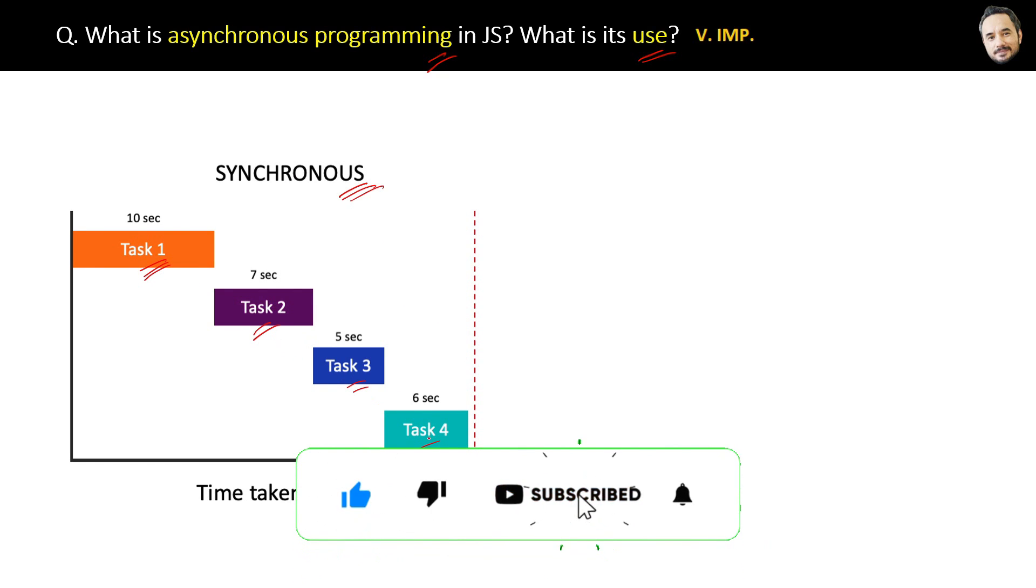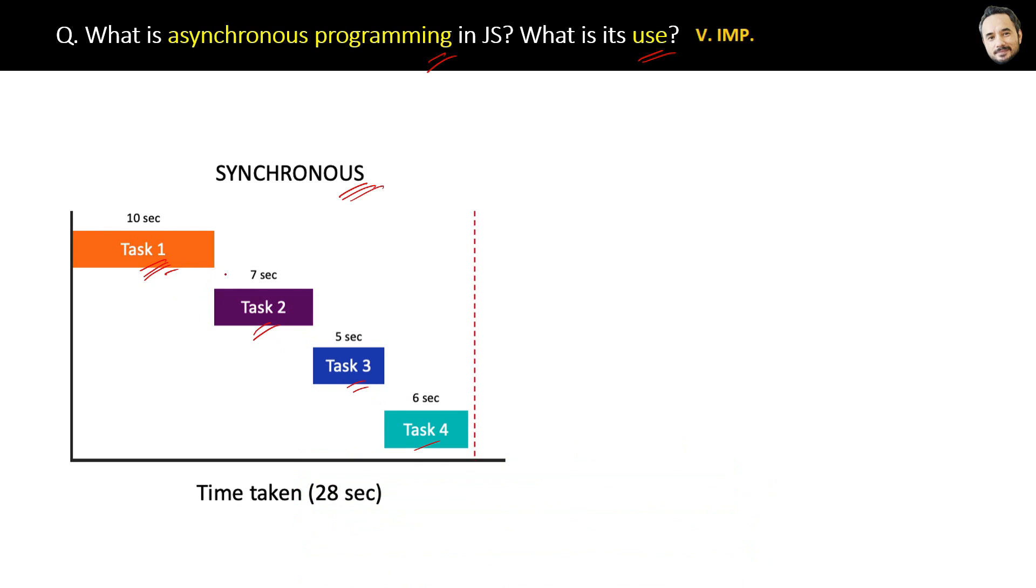In synchronous programming, they will execute something like this in sequence. Here Task 2 will only start once Task 1 is finished. At the end, the total time taken by them is simply the sum of the time taken by the individual tasks.